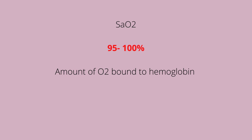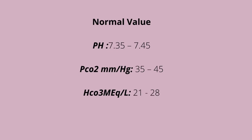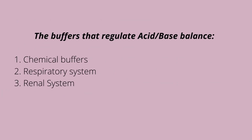The SaO2 normal range is 95 to 100, and it measures the amount of oxygen bound to hemoglobin in the arterial blood. The key values to interpret an ABG are the pH, the PCO2 (carbon dioxide level), and the bicarb, which is the HCO3.